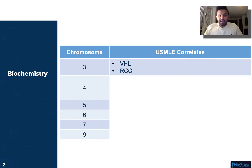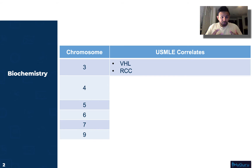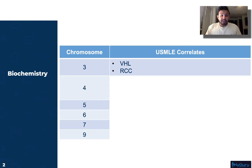Chromosome number three is going to be related to von Hippel-Lindau syndrome as well as renal cell carcinoma. You can think of renal cell carcinoma — RCC — having three letters, so that's chromosome number three. Von Hippel-Lindau syndrome is related to very vascular tumors; renal cell carcinoma is one of them. Hemangioblastomas of the cerebellum is another tumor related to von Hippel-Lindau syndrome.